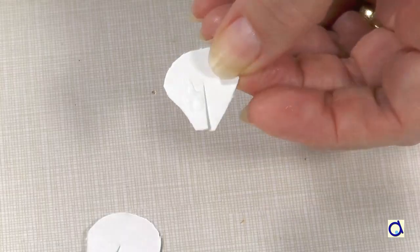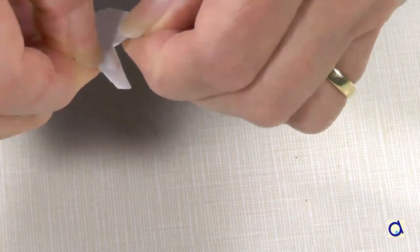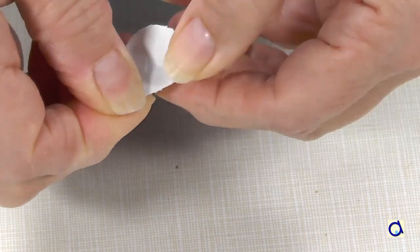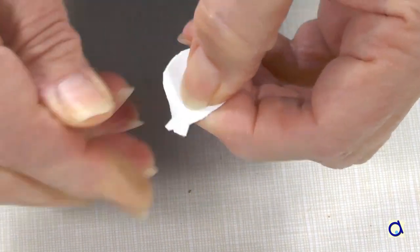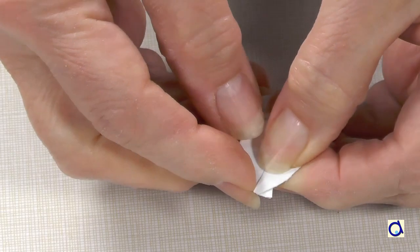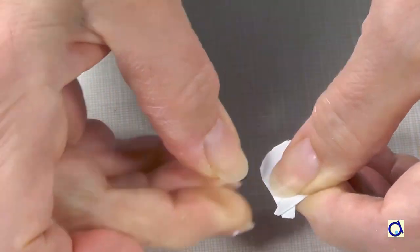To give the ears some volume, put a dot of white glue on one side and fold the other side over. Hold for a minute or use a clothespin. Do the same for the second ear.